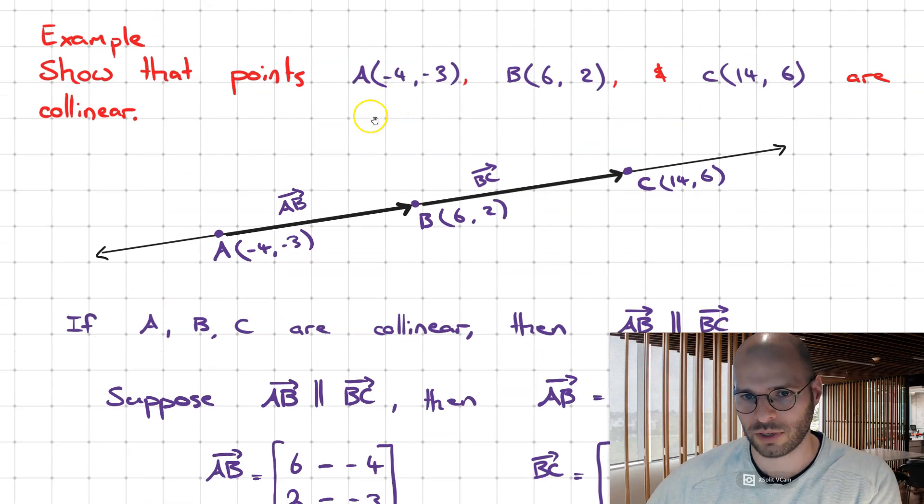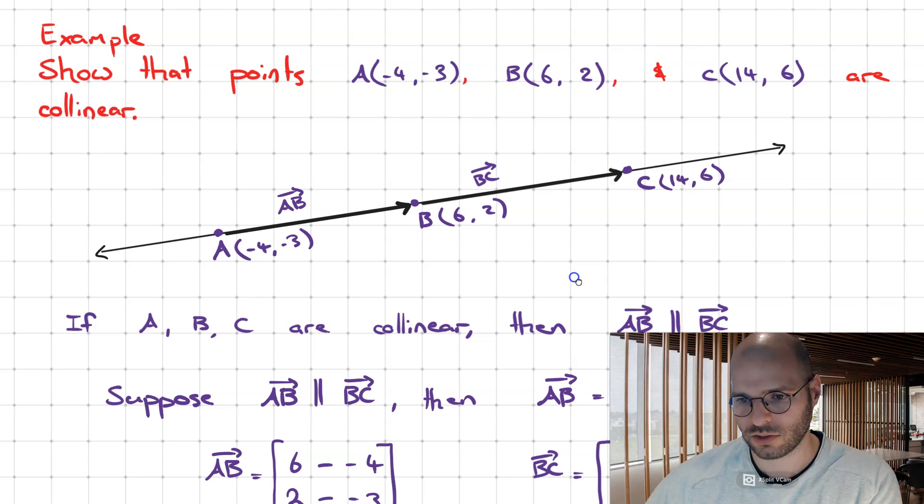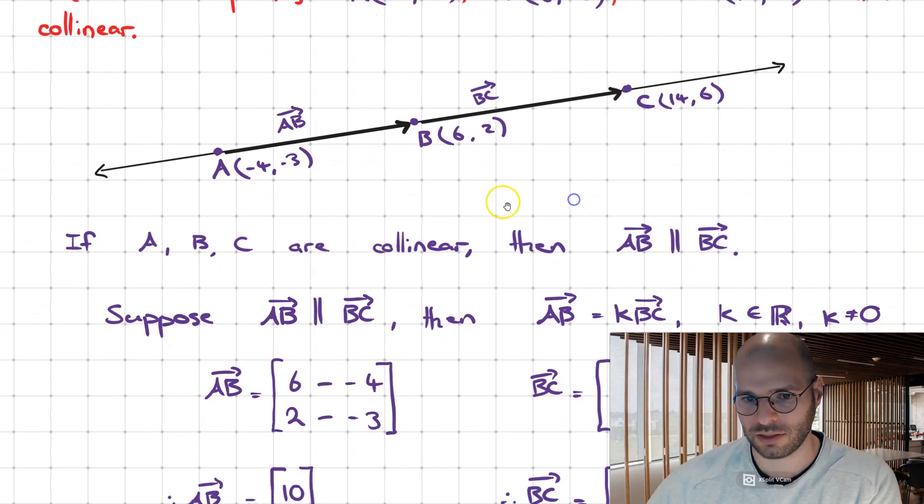Using the example where we're checking for points A, B and C, we know that if they're collinear, they will all lie upon a straight line together. Therefore, we can form the statement to show that the position vectors between the points are going to be parallel.